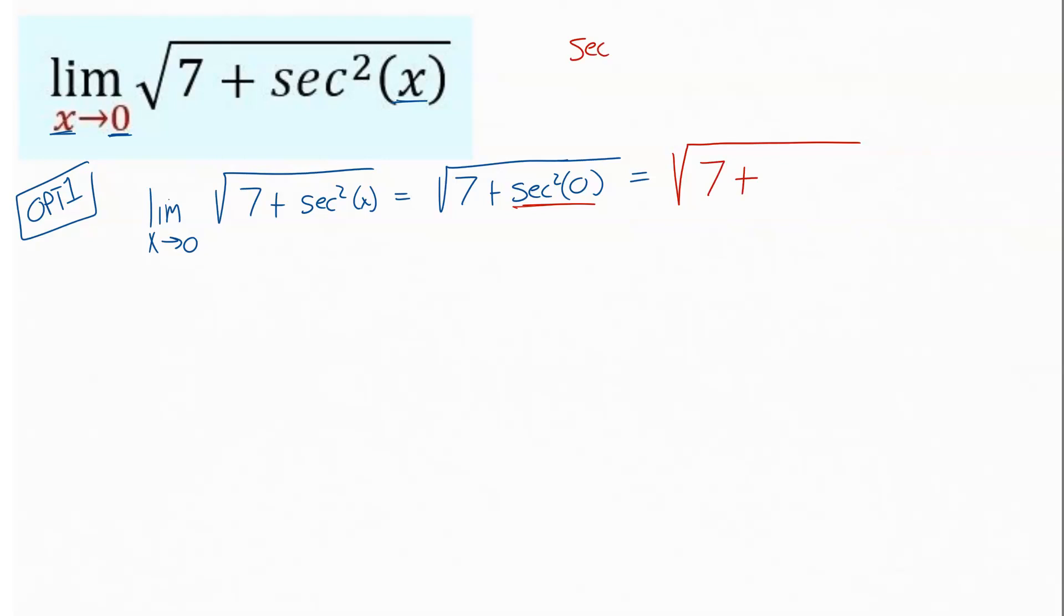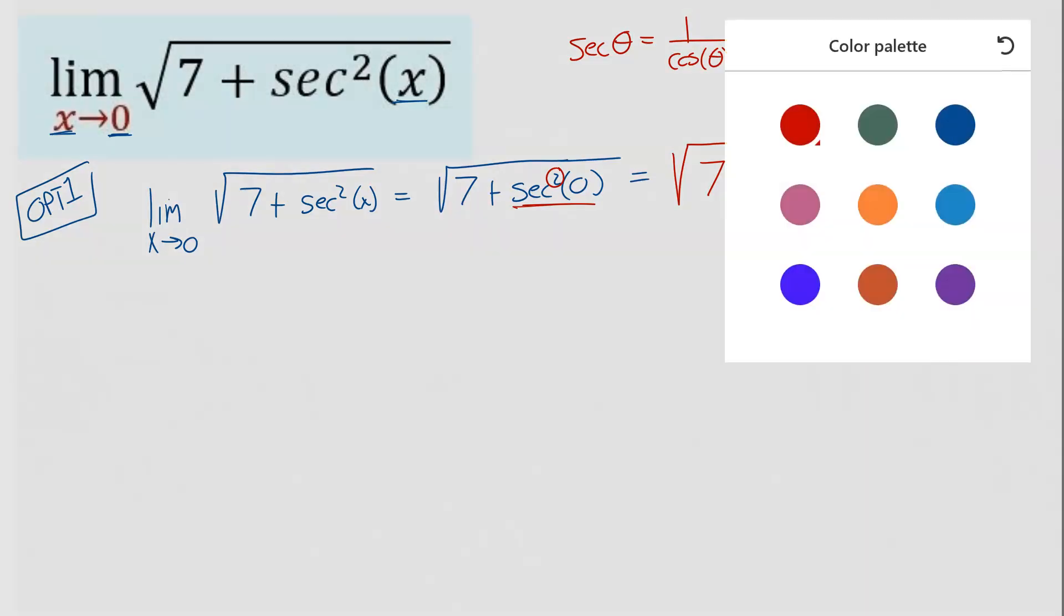Remember that secant theta is the same as one over cosine theta. This one happens to be squared, so I'm going to rewrite this as one over the cosine squared of zero, which is essentially just saying multiply that answer by itself.